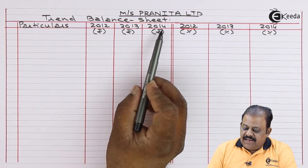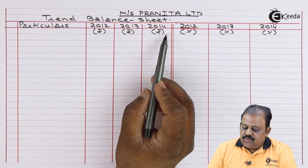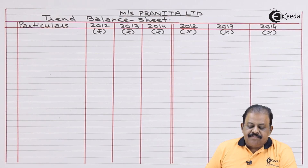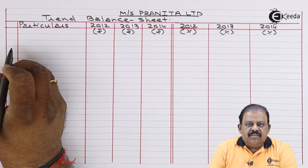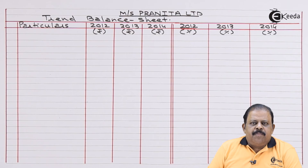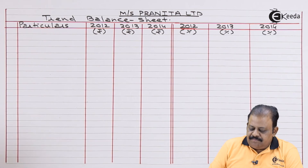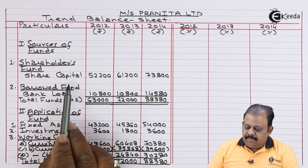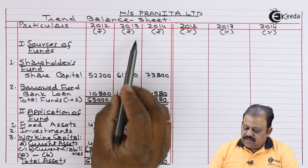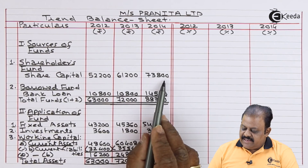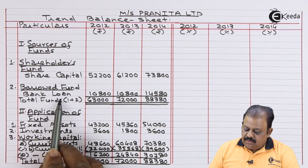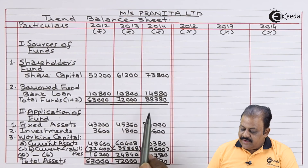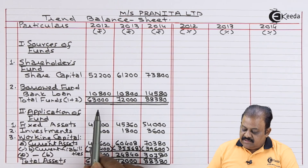M/s Pranita Limited trend balance sheet — absolute amounts and percentages for 2012, 2013, and 2014. Sources of funds: shareholders fund — share capital is 52,200 for 2012, 61,200 for 2013, 73,800 for 2014. Borrowed fund — bank loan is 10,800 for 2012, 10,800 for 2013, 14,580 for 2014.